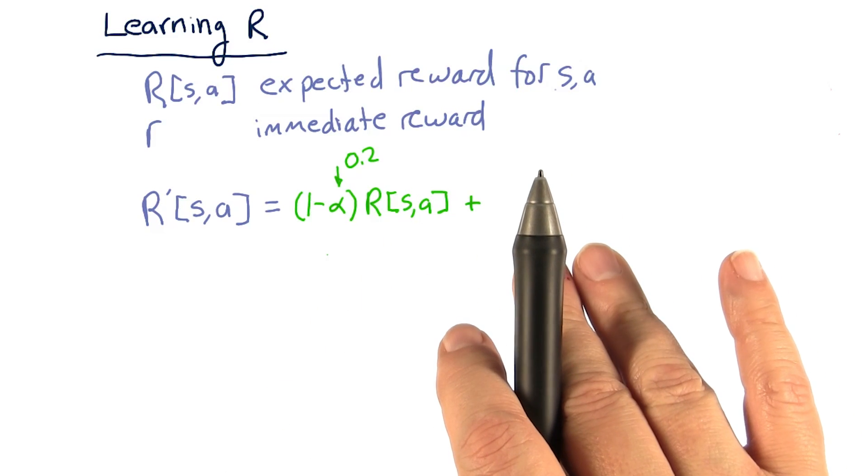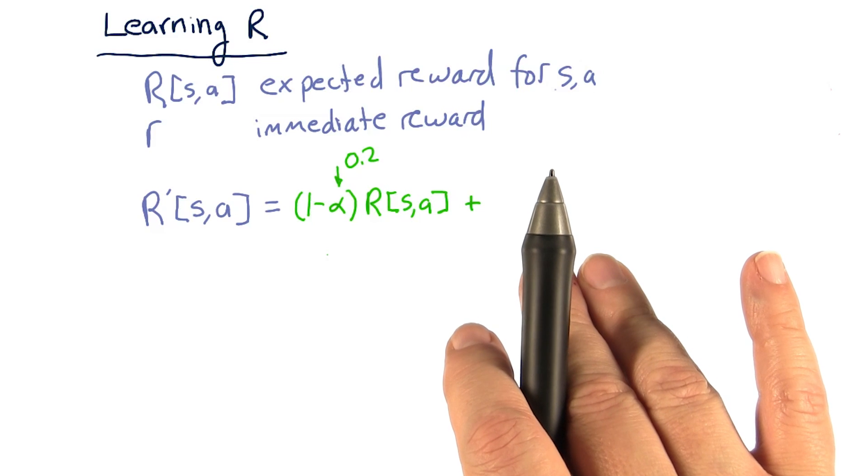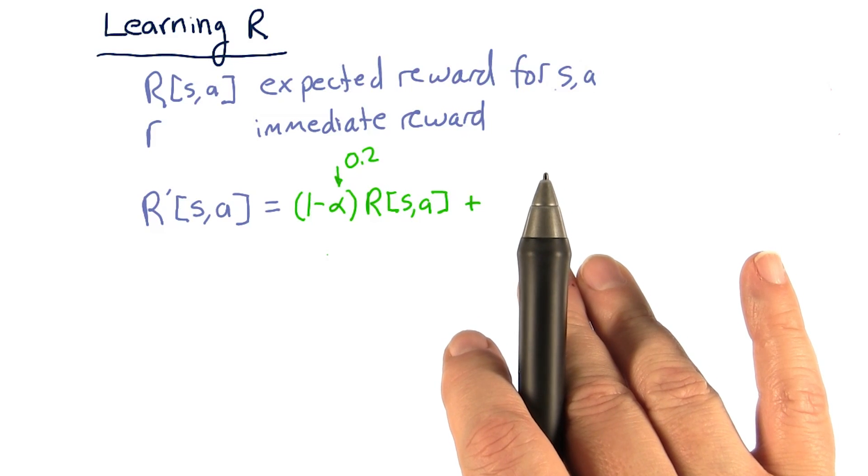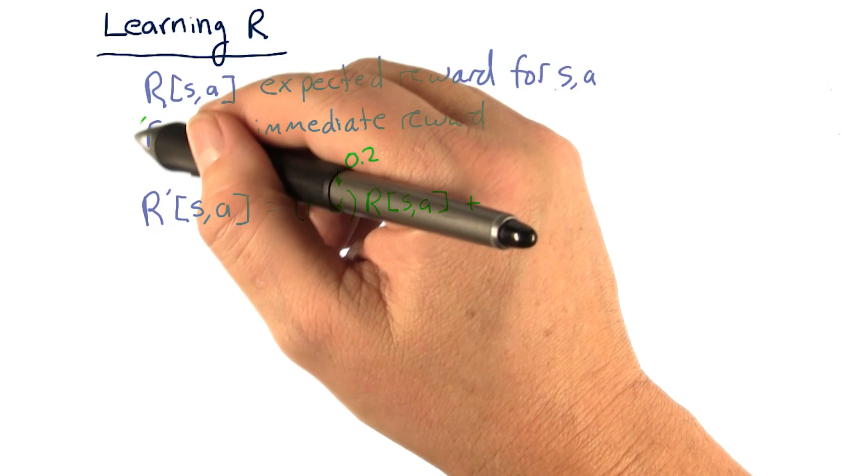And then we add in, of course, our new estimate of what that value ought to be. And we just use r for that new estimate.